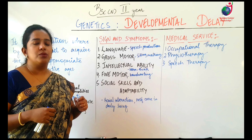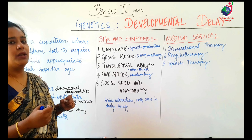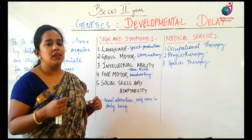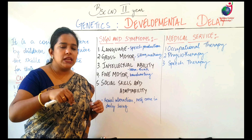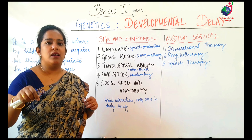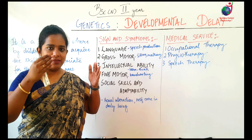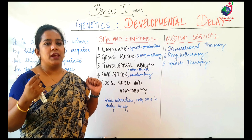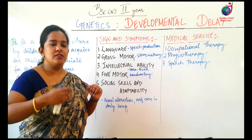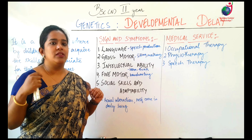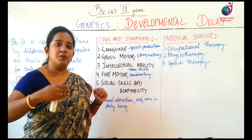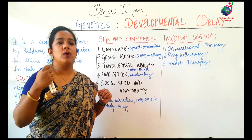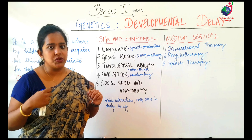Gross motor activities or skills are like running, sitting, and standing. These are gross motor activities, and some children don't acquire these things in the case of developmental delay.